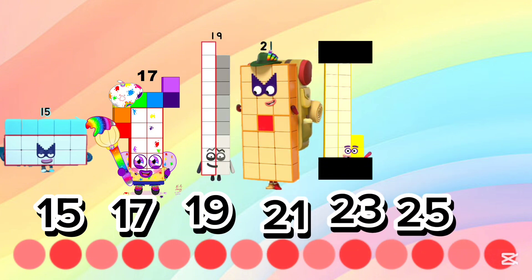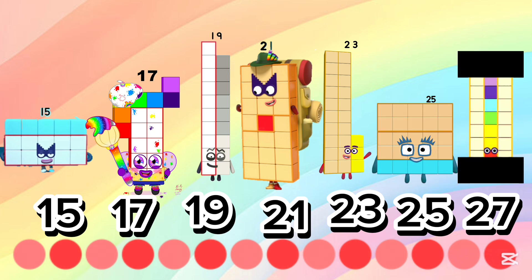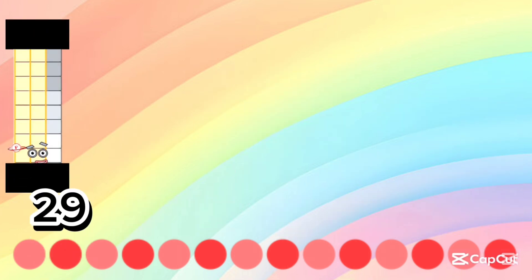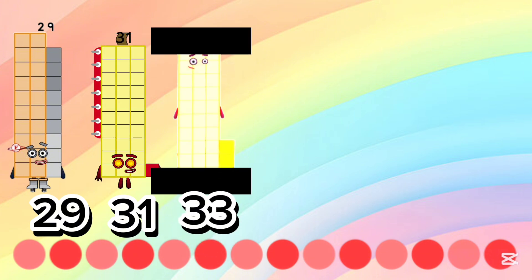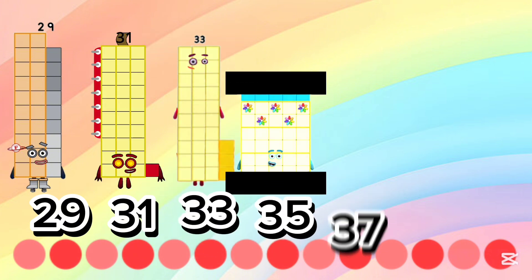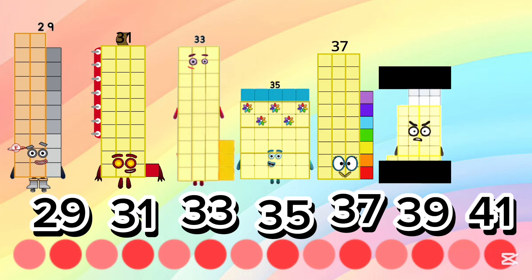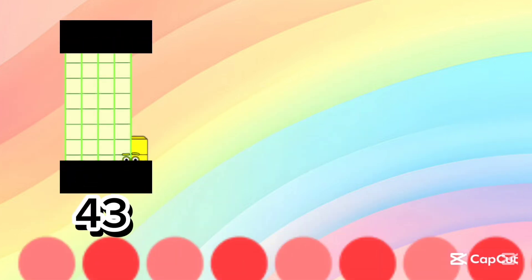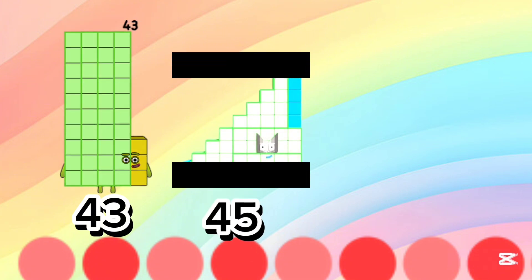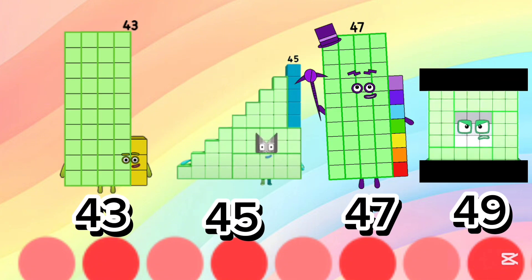twenty-three, twenty-five, twenty-seven, twenty-nine, thirty-one, thirty-three, thirty-five, thirty-seven, thirty-nine, forty-one, forty-three, forty-five, forty-seven, and last forty-nine.